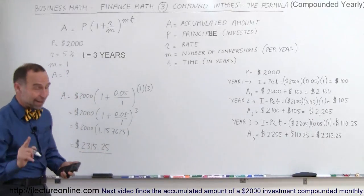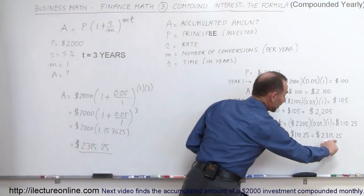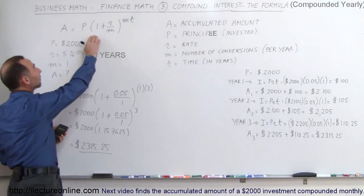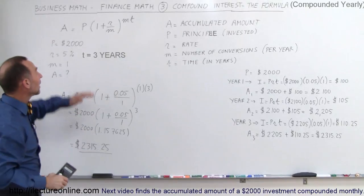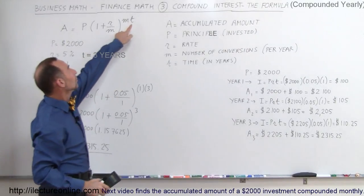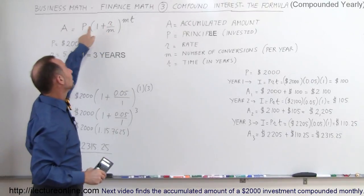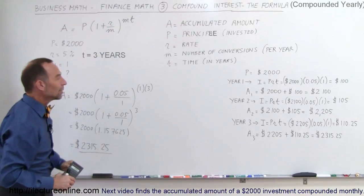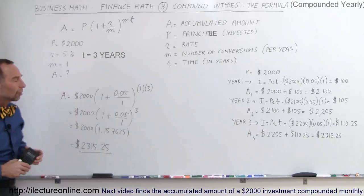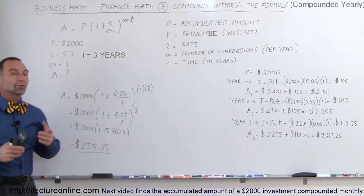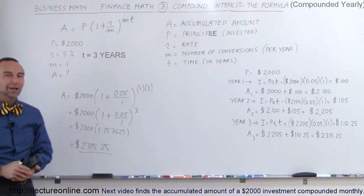which should be the exact same number as we have over here. As you can see, the equation works. So that's the compound interest equation: the amount accumulated after T years with M conversions per year, R being the rate, and P being the original principal. That's how we calculate the amount in your account when you invest at a certain interest rate with a certain number of conversions per year.